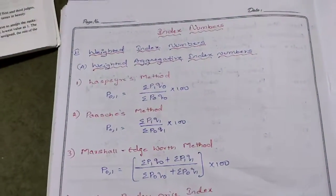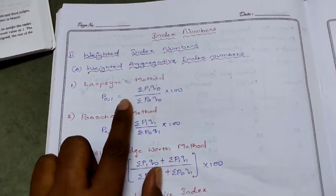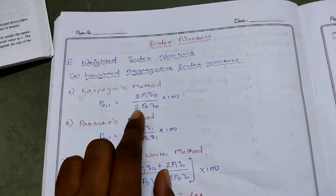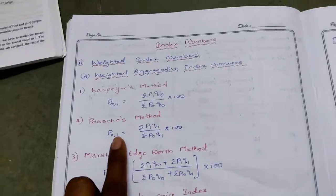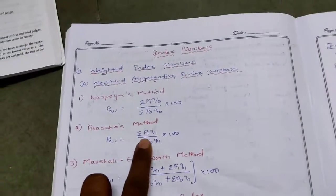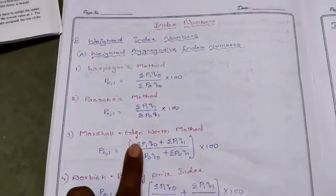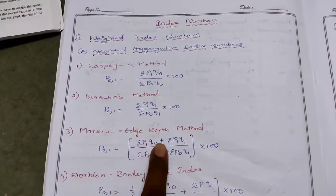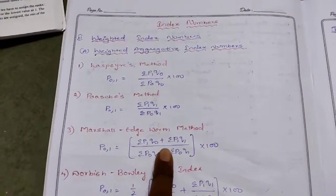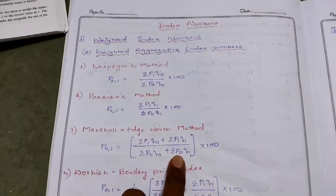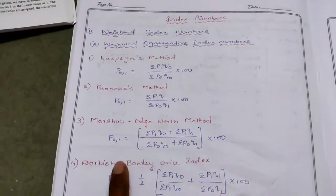First is Laspeyre's method. The formula is: P01 = (ΣP1Q0 / ΣP0Q0) × 100. Next, Paasche's method: P01 = (ΣP1Q1 / ΣP0Q1) × 100. Marshall-Edgeworth method formula: (ΣP1Q0 / ΣP0Q0) + (ΣP1Q1 / ΣP0Q1) × 100.